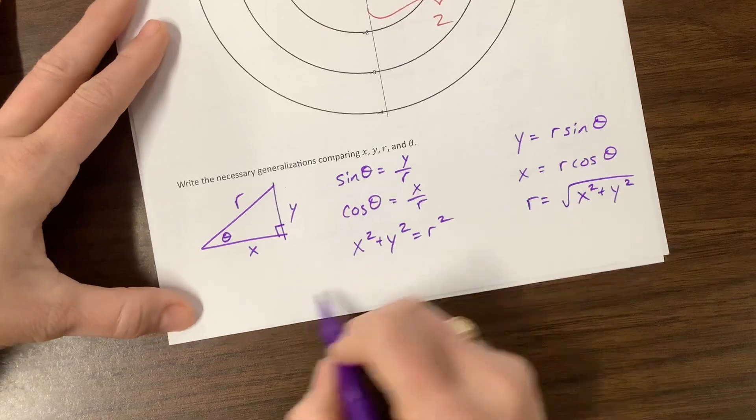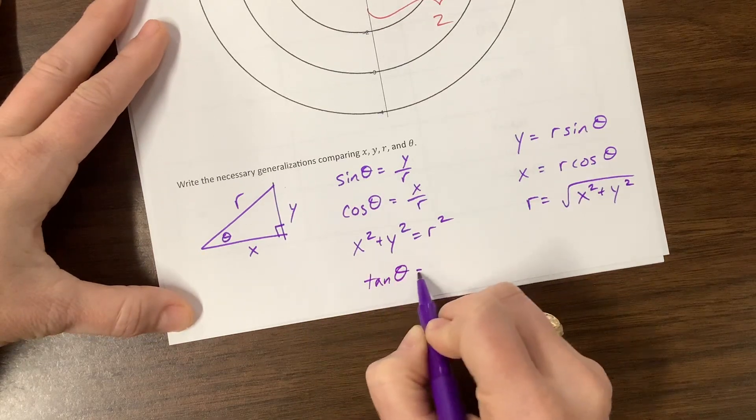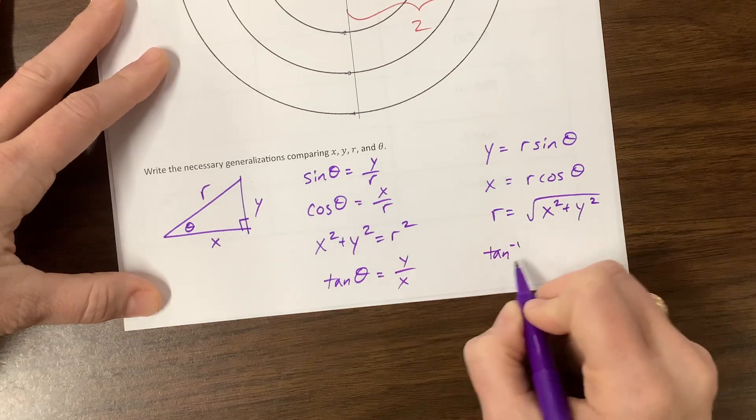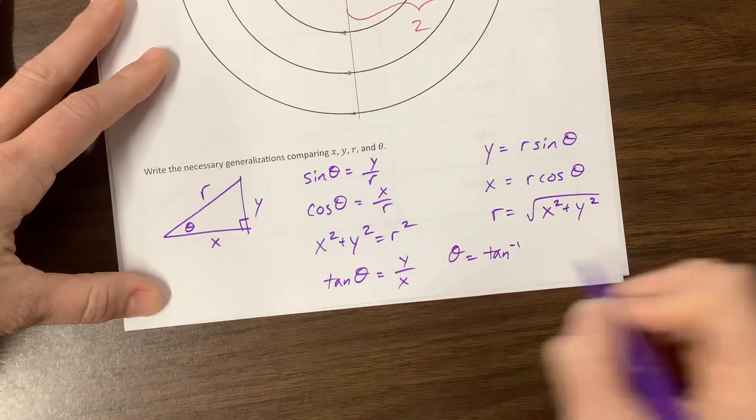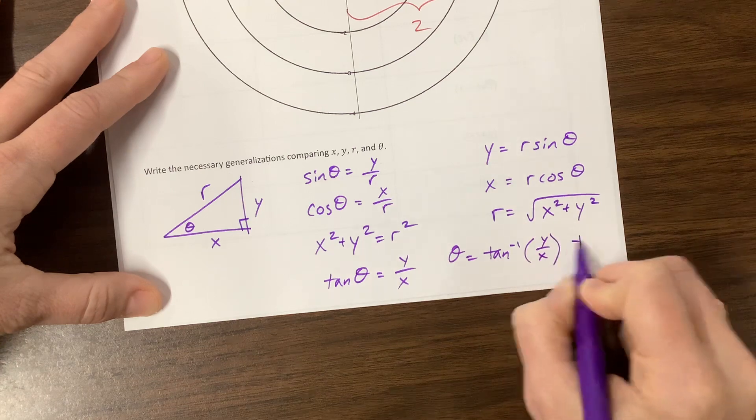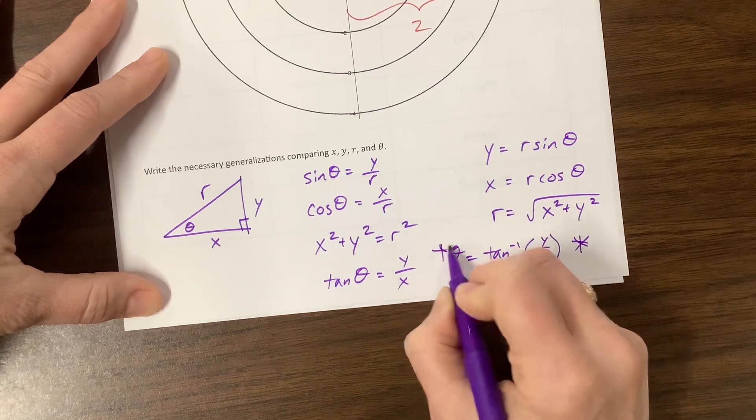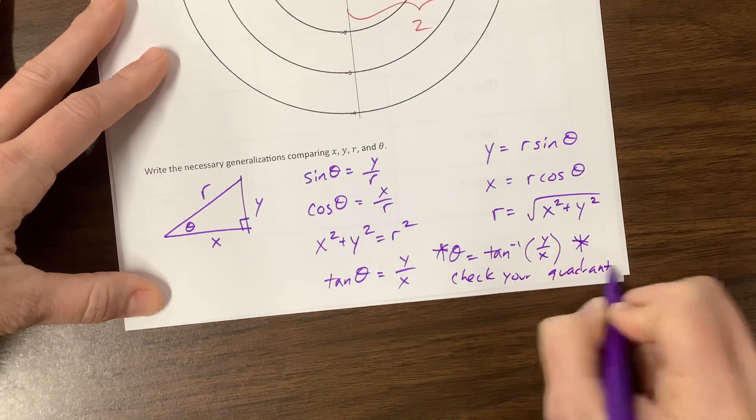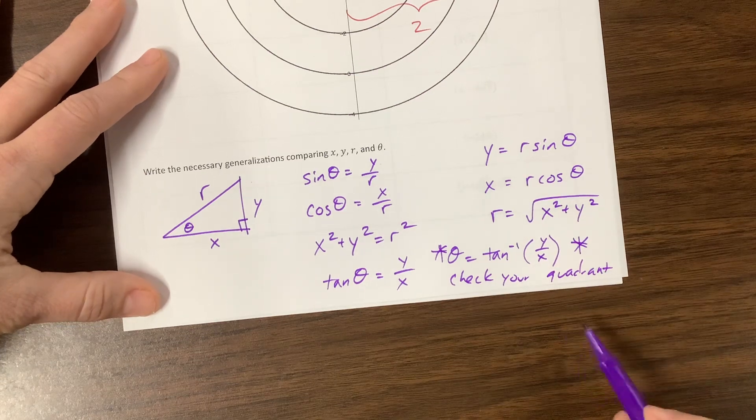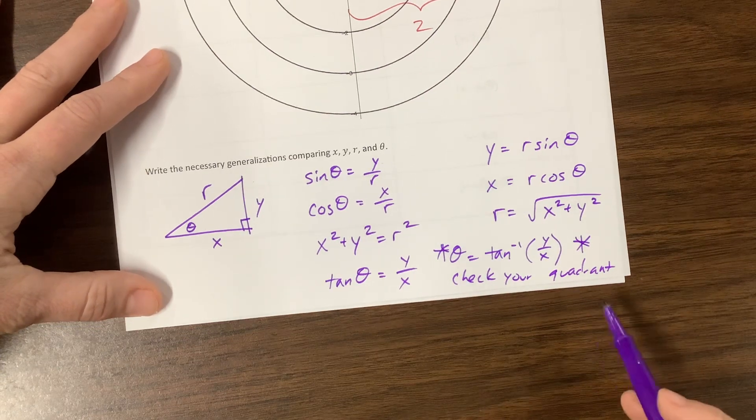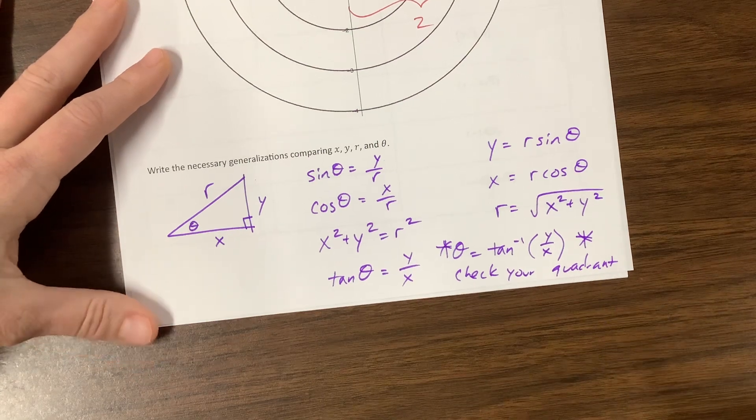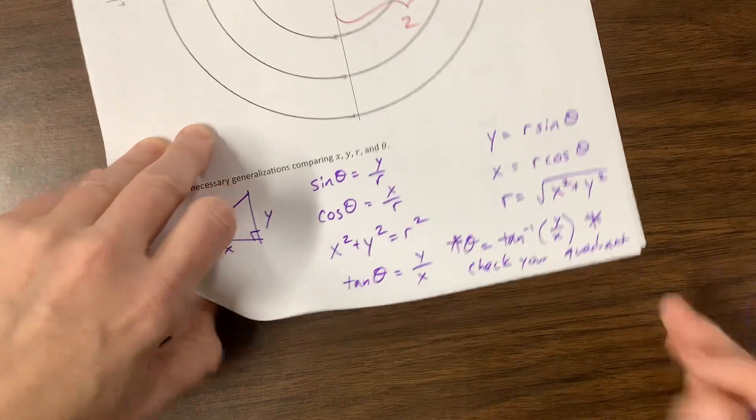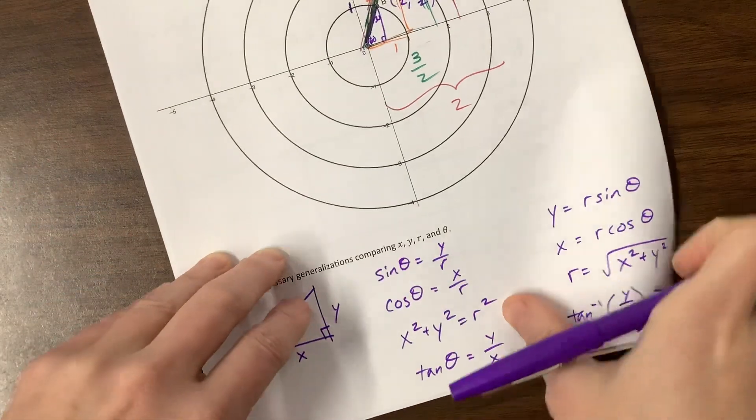And then we also know that tangent of theta is going to be equal to y over x. And so what I would write down is that theta is equal to the inverse tangent of y over x. But I'm going to put a little star here and remind you, check your quadrant. Okay, so what happens is if you need to use a calculator, if you're not quite sure what's happening, you just want to make sure that you give me the angle that's in the appropriate quadrant. Your calculator will not give you angles in quadrant two or three. So you have to be careful. So, yeah, think through that one.